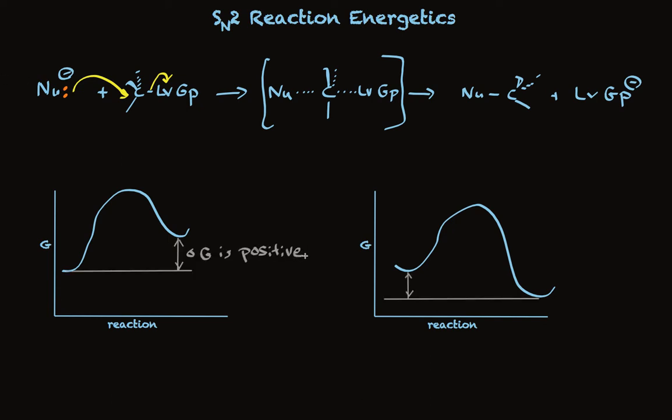The difference between these two diagrams is the thermodynamics. Take a look: in one case, the change in free energy is positive, which means the reaction is unfavorable — it's going uphill. In the other case, the change in free energy is negative — it's going downhill and it's favorable. Both cases can take place. It just means that in the case where delta G is positive, we have to supply energy, and if we want this reaction to be productive and make desired products, we'll have to ensure that this is not an equilibrium reaction.